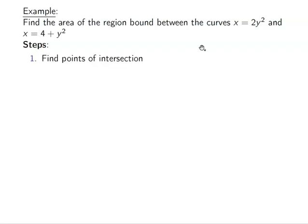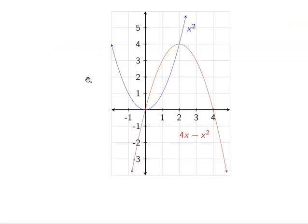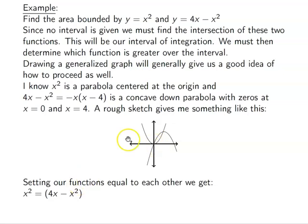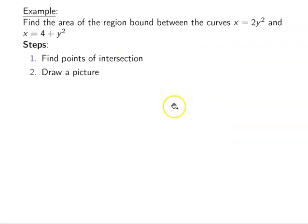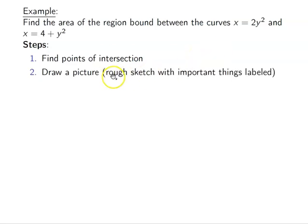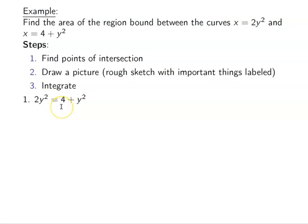The steps are: find the points of intersection, draw a picture with important parts labeled, form the integral, and calculate. Finding intersections first makes it easier to label the graph accurately. A rough sketch with the intersection points labeled is the goal.